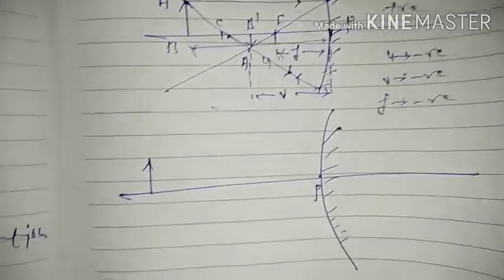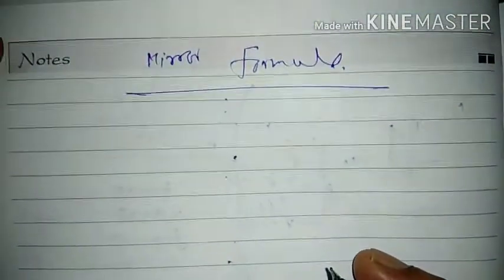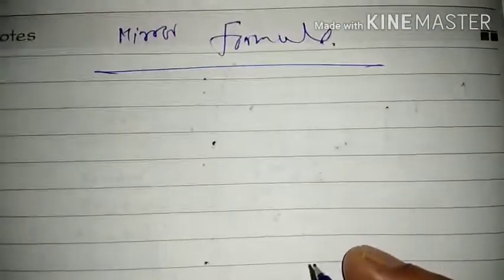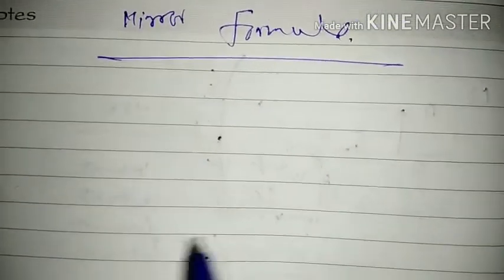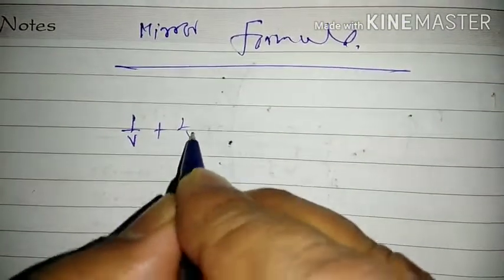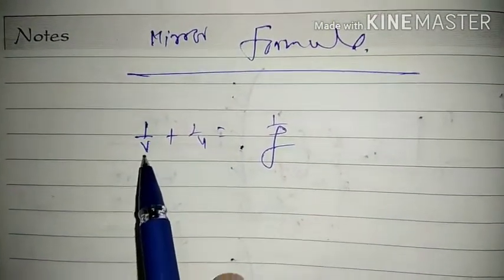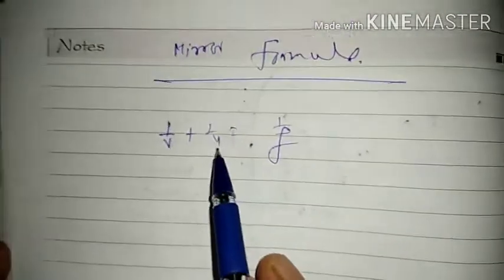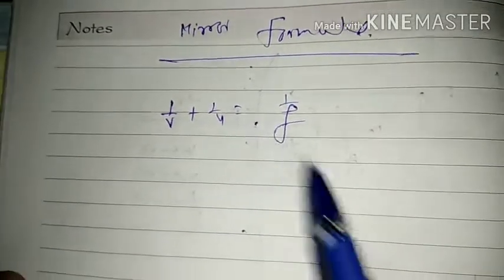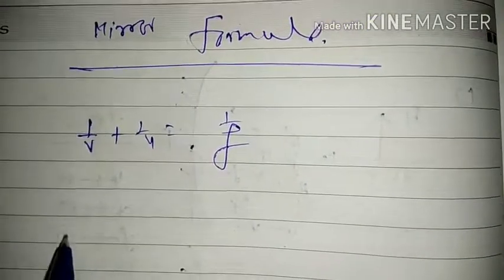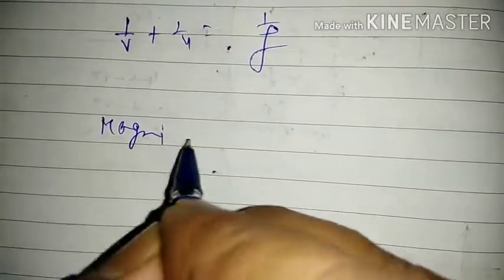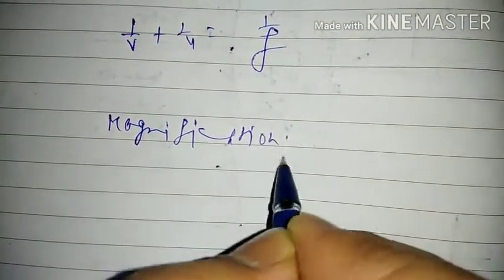Now we shall see the mirror formula. The mirror formula gives us the relation between object distance, image distance, and focal length of a spherical mirror. It is given by: 1/v + 1/u = 1/f, where v is image distance, u is object distance, and f is focal length.